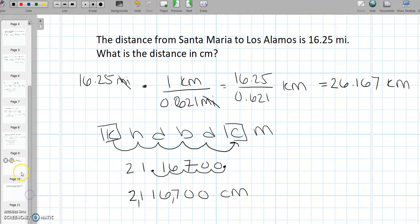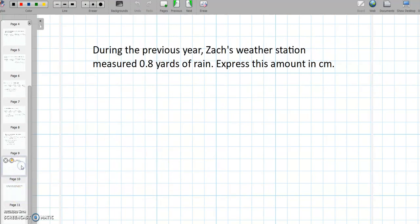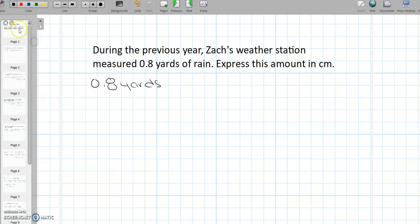Add in some commas so it's easier to read. So 2,616,700 centimeters. All right, let's move on to the next problem. All right, so during the previous year, Zach's weather station measured 0.8 yards of rain. Express this amount in centimeters. All right, so this is going to be fun. So initially we are given 0.8 yards and we are asked to convert this into centimeters. So let's go and check out our conversion table and see what there is to see.